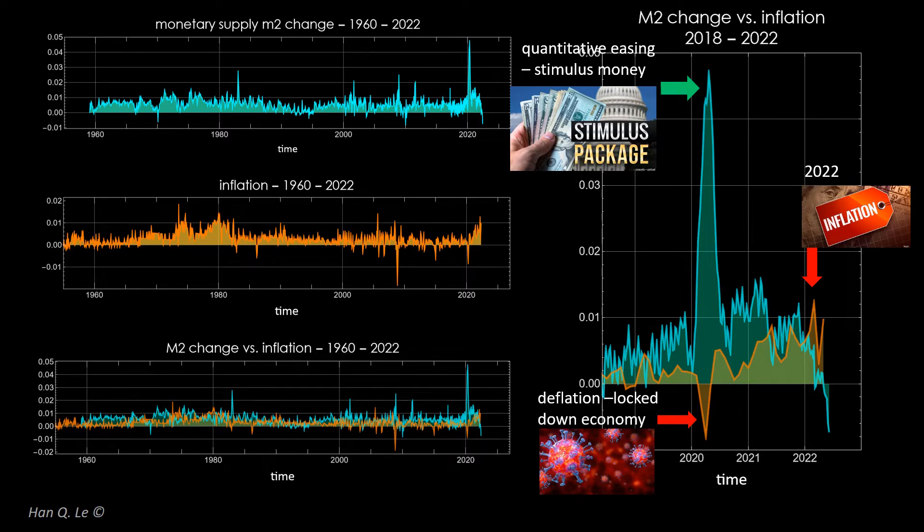If the hypothesis is correct, then it is necessary to consider the time difference between the two events: the spike of M2 increase and the rise of inflation. This is known as the response time, or temporal response function, an essential concept in all time dependent phenomena. For this particular case, the response time is approximately one and a half to two years, and it is necessary to be taken into considerations in doing time series correlation.